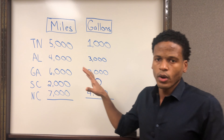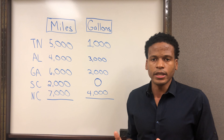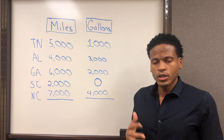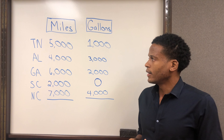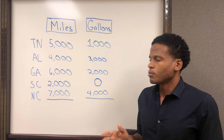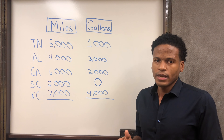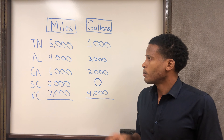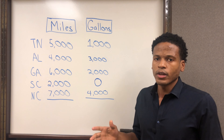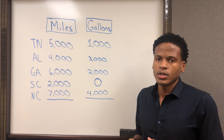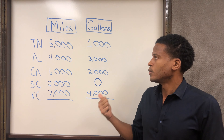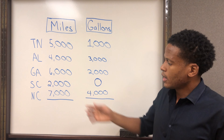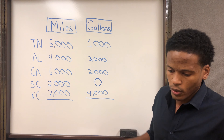So where do you get the miles from? You should be able to get this information from your ELD — that's the electronic logging device. For example, if you're using KeepTruckin, there's a report in there that will give you the miles by state, and you can use that report to figure out how many miles you traveled in each state for the quarter. In this example, we went through five states for a total of 24,000 miles.